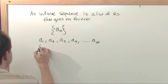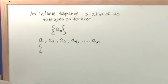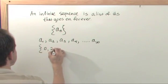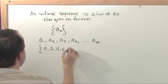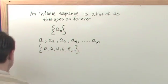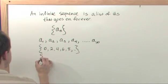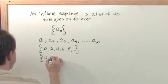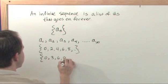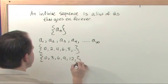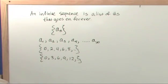So some examples of sequences would be things like this, 0, 2, 4, 6, 8, dot dot dot. We talked about that. Or like we talked about before, 0, 3, 6, 9, 12, dot dot dot. And you see there's patterns in each one of them.